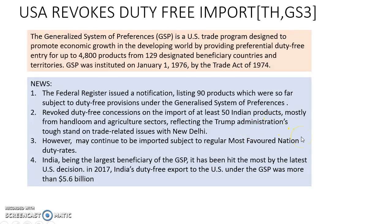How does this impact India? India is one of the largest beneficiaries of the Generalized System of Preferences. Every year, India exports up to $5.6 billion worth of goods into the United States of America. Many of these goods are agriculture products, horticulture, and handloom products, which will especially affect the MSME and primary sector in the Indian economy.